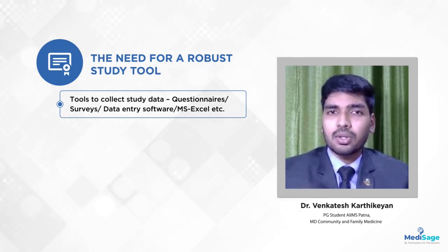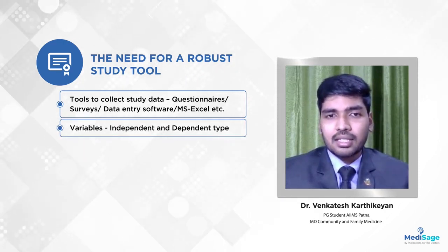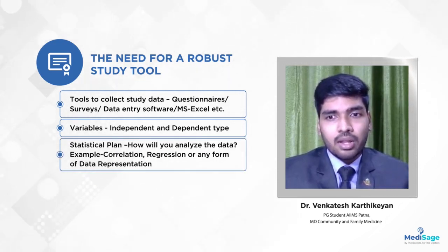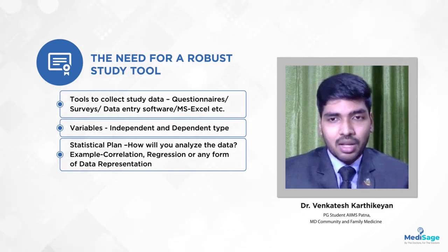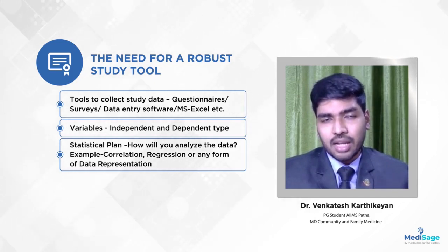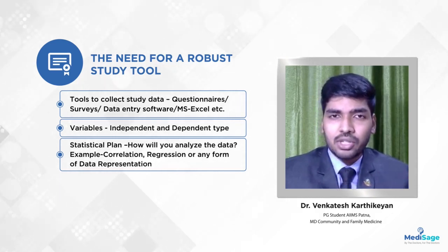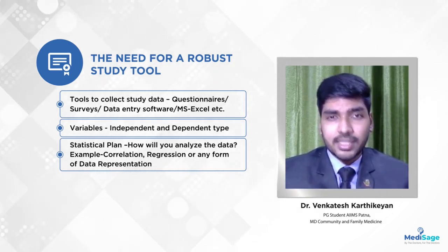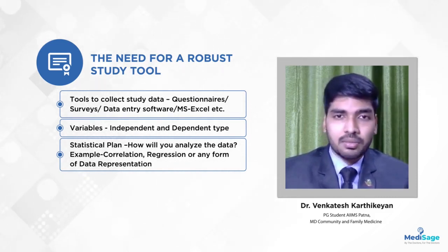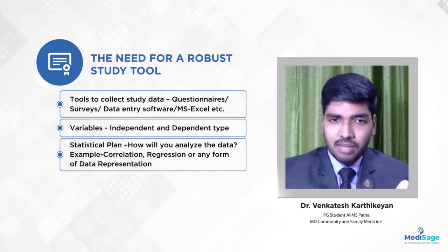You should also list out the dependent and independent variables relevant to your study. Next is the statistical analysis plan — once you get the data, how are you going to analyze it? What are you going to describe, and what correlations are you going to examine? Discuss with your statistician and guide, prepare dummy tables, and have a clear vision of how to analyze the data. Also decide how you will represent data — in column charts, pie charts, etc.